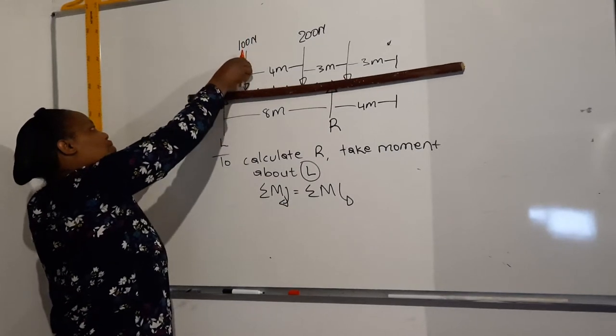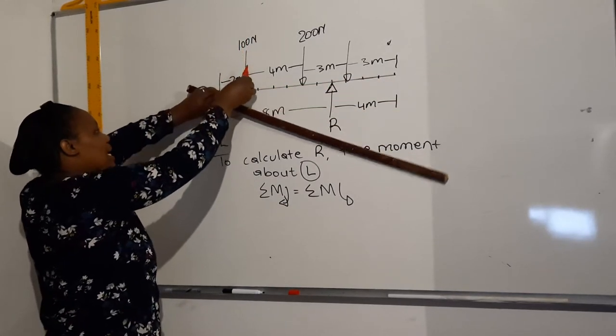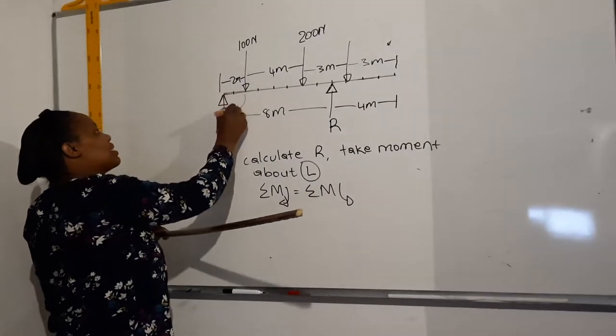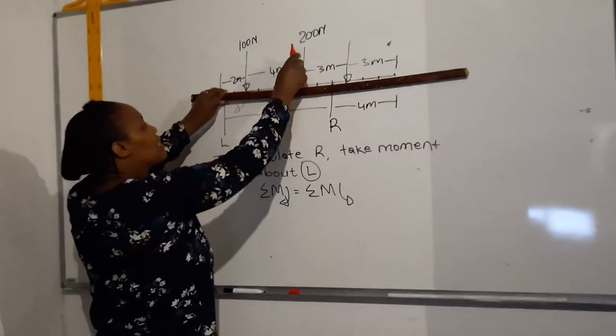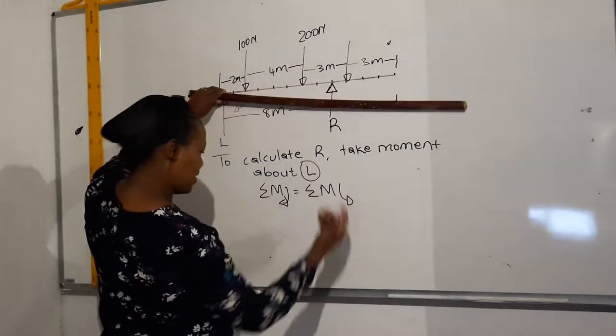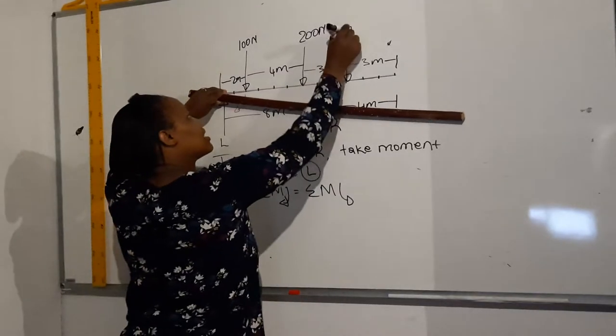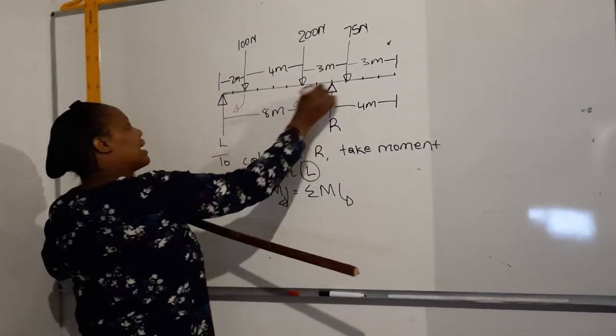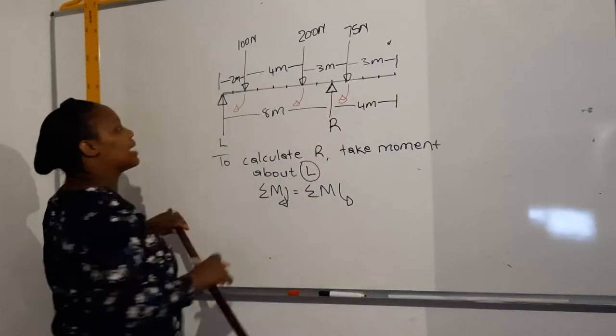If you look at that force, the 100 newton force is going to push it down like that, making it turn clockwise. So you make a note that's clockwise. So the same will be for the 200 force and the 75 newton force. That force there is 75 newtons. So they will also make a clockwise moment.